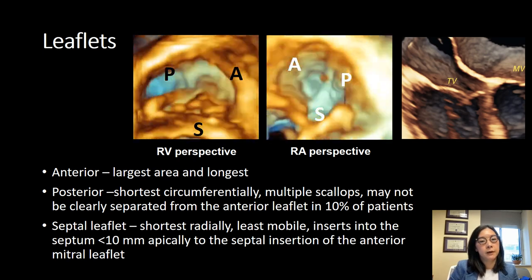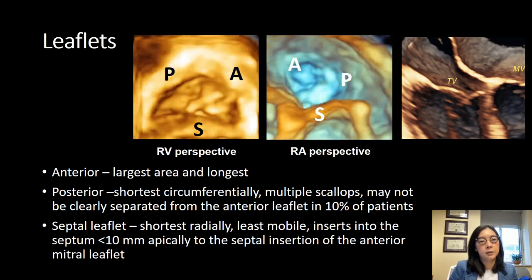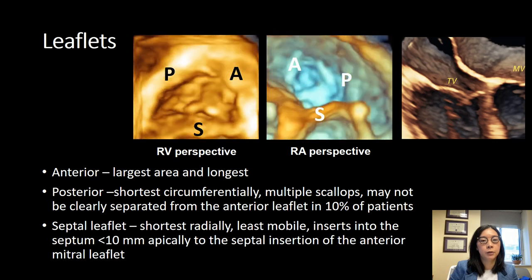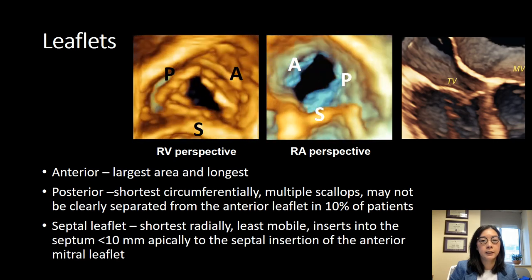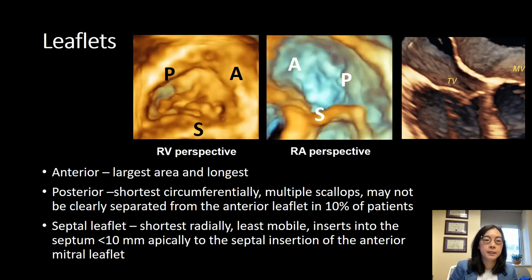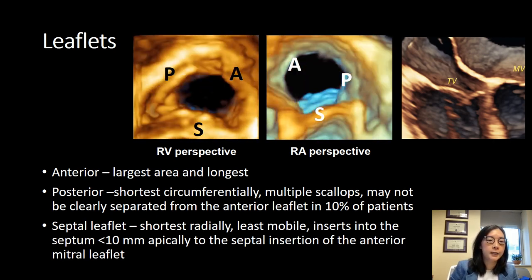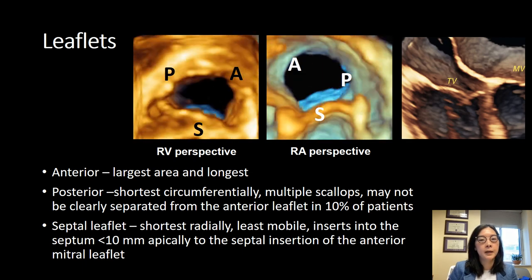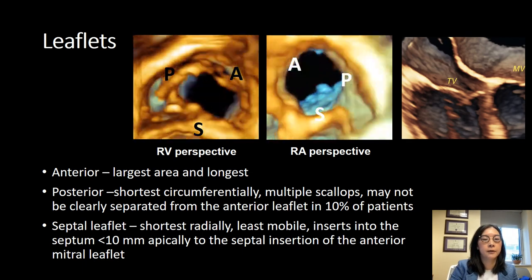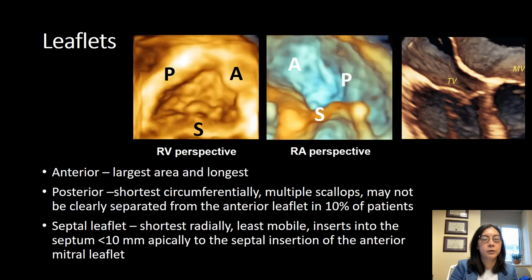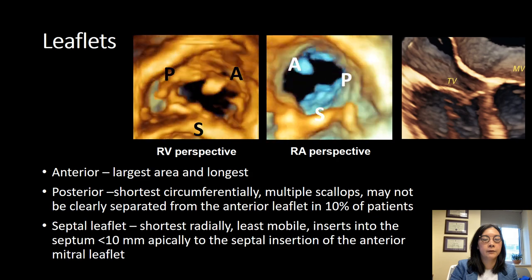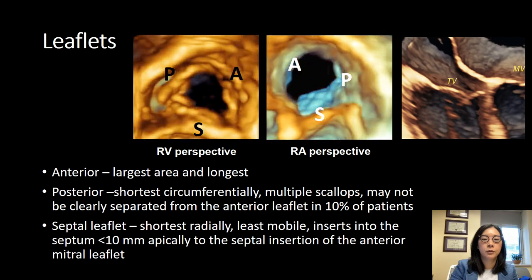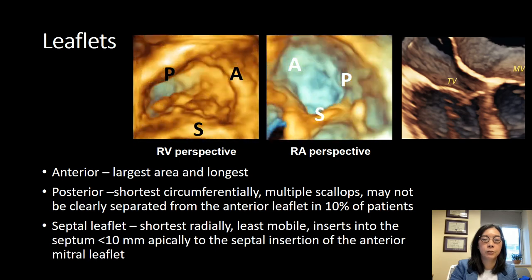The tricuspid valve leaflets can actually vary in terms of size. The anterior leaflet tends to be the largest in terms of area as well as the longest. The posterior leaflet is the shortest circumferentially; it's made of multiple scallops and may not be clearly separated from the anterior leaflet in about 10% of patients. The septal leaflet tends to be the shortest radially, it's also the least mobile, and inserts into the septum about 10 mm apically to the septal insertion point of the anterior mitral valve leaflet. Transthoracic images on the top row show the anterior, posterior, and septal leaflets as identified from the ventricular perspective on the left, the right atrial perspective in the middle, and a cross-section showing the septal insertion point of the tricuspid valve leaflet compared to that of the mitral valve leaflet.